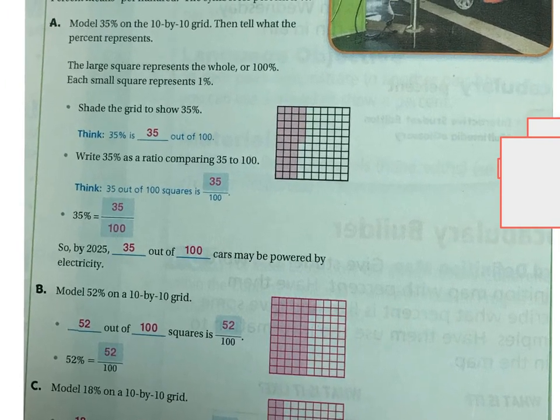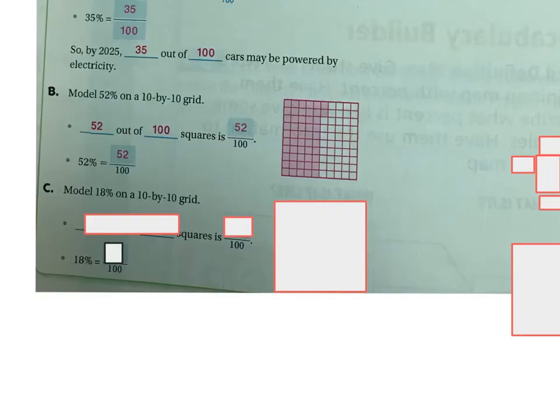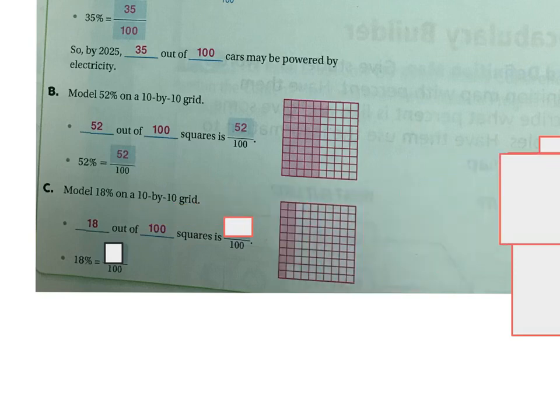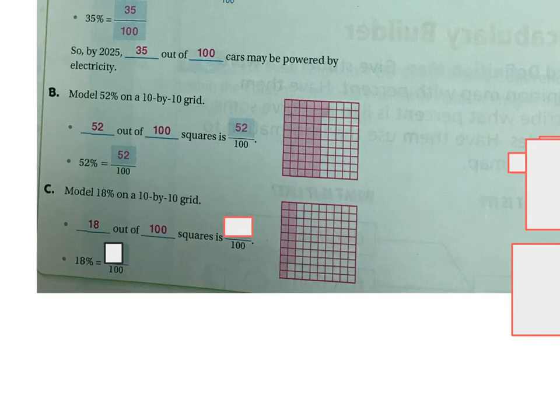Same thing if I were to model 18%. So if I'm modeling 18% on a 10 by 10 grid, I have 18 out of 100. I have my 100 squares and I have 18 of them colored in. Then it's 18 over 100 and 18% is 18 over 100.